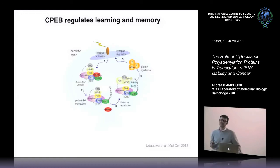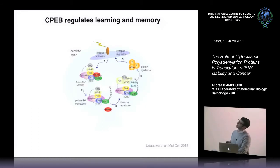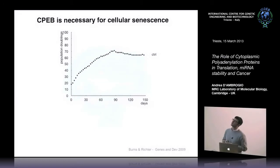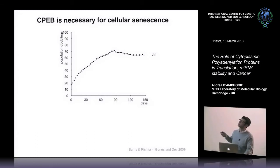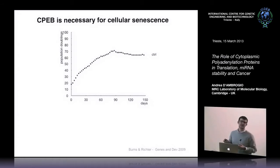Mice that lack CPEB indeed have defects in memory and learning. But what I will be telling you about today is the role of CPEB in cellular senescence in human foreskin fibroblasts. Looking at the normal growth curve of fibroblasts from our cell bank, you see that at some point — more or less 90 days — the cells stop dividing and enter cellular senescence.